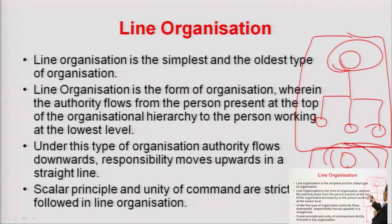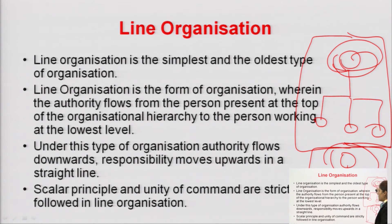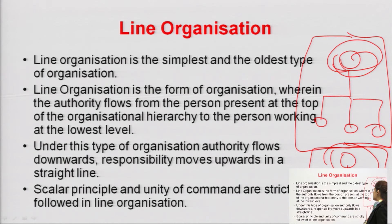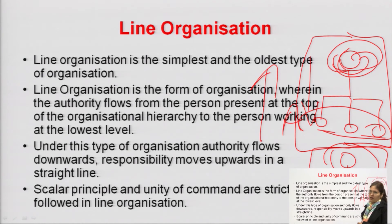Line organization is suitable for small organizations because permanent departments do not exist — delegation of authority is there but no permanent departments. This type of organizational structure is known as line organization where authority flows from the top level to the lowest level. Authority flows downward and responsibility moves upward. The person at the lower level carries more responsibility for the actual work.